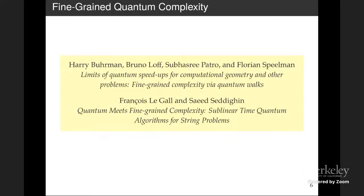Finally, we'll wrap up with a couple of papers related to quantum computation and fine-grained complexity, where the main question is how much does quantum speed up algorithms. For problems like closest pair, can we prove upper bounds by giving quantum algorithms and conditional lower bounds by putting forth conjectures? The first paper looks at a quantum version of the 3SUM problem and proves many interesting conditional quantum lower bounds. The second paper looks at string problems and gives non-trivial quantum algorithms. I'm very excited that we have all these thematically unified fine-grained complexity papers in this session.